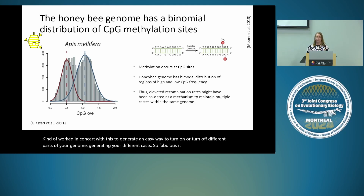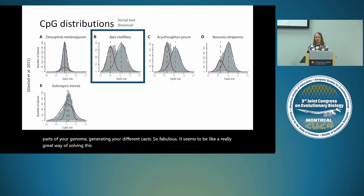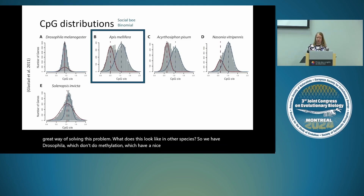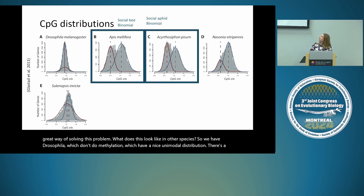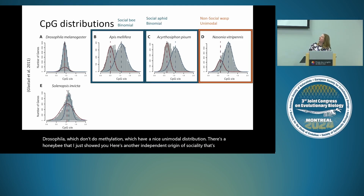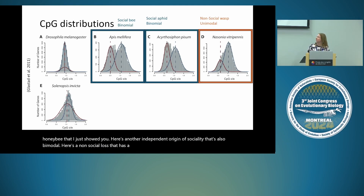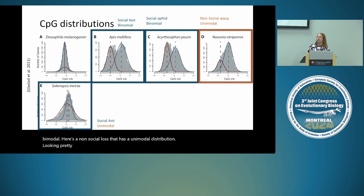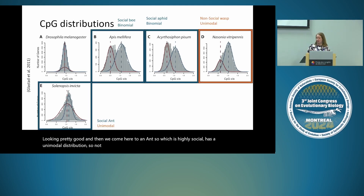What does the CpG distribution look like in other species? Drosophila, which don't do methylation, show a nice unimodal distribution. The honey bee is bimodal. Another independent origin of sociality is also bimodal. A non-social wasp has a unimodal distribution. But an ant — highly social — also has a unimodal distribution, so the pattern doesn't hold universally.